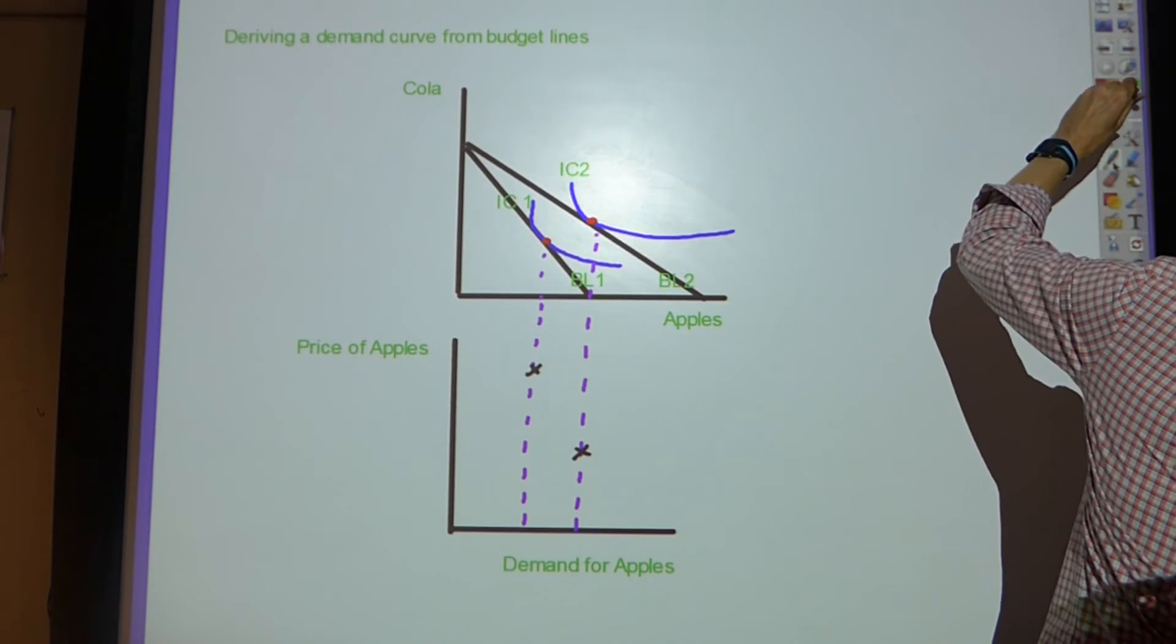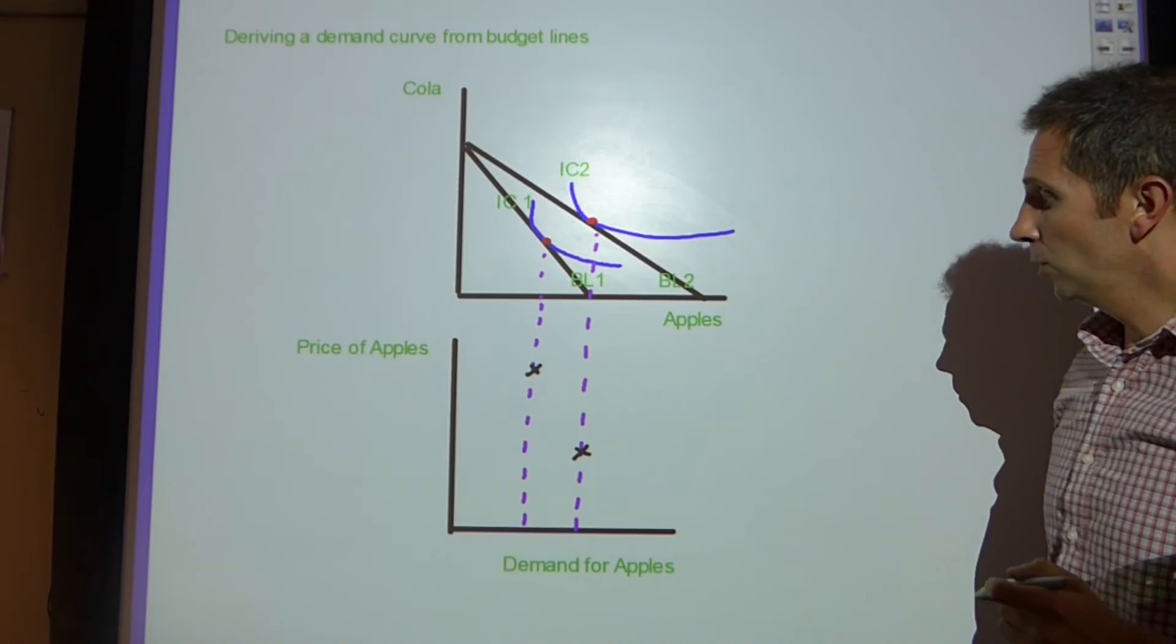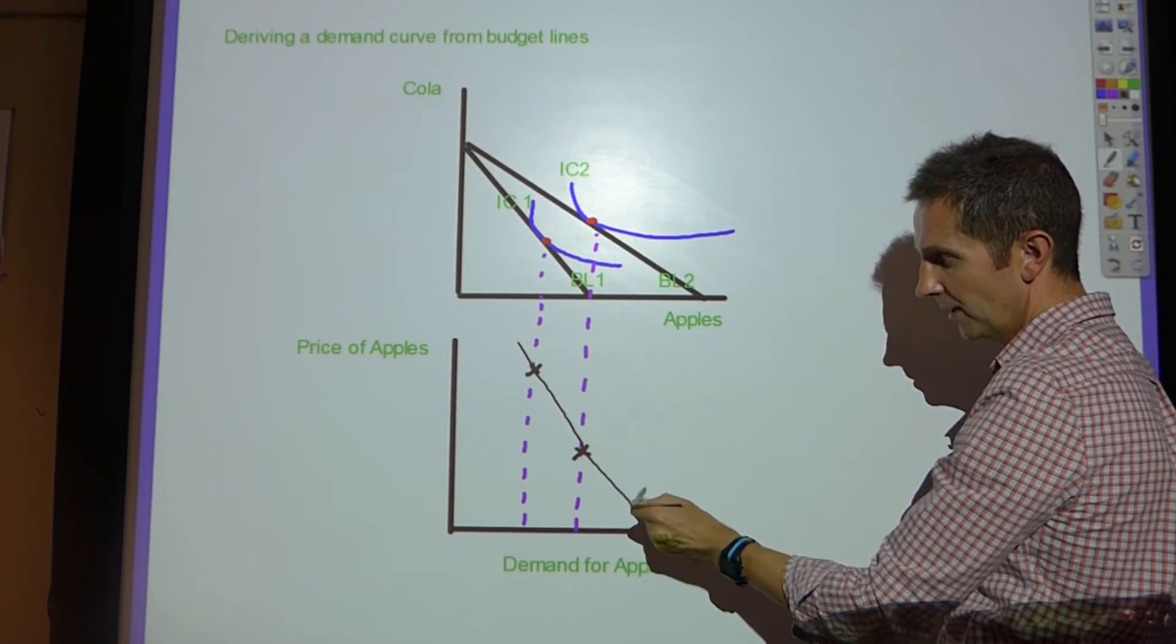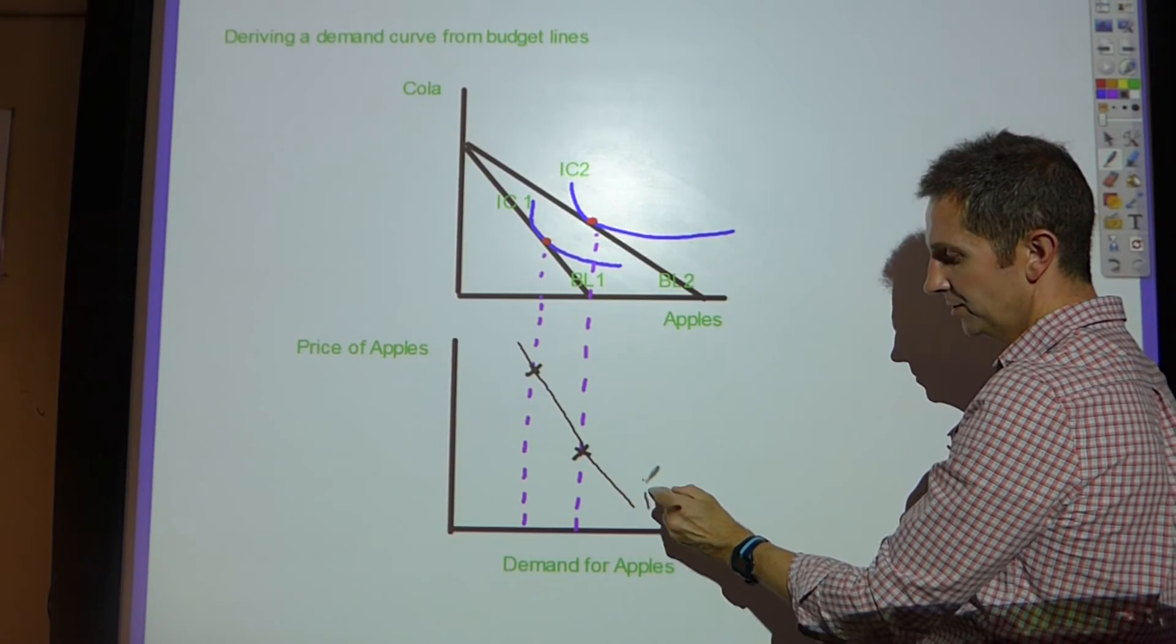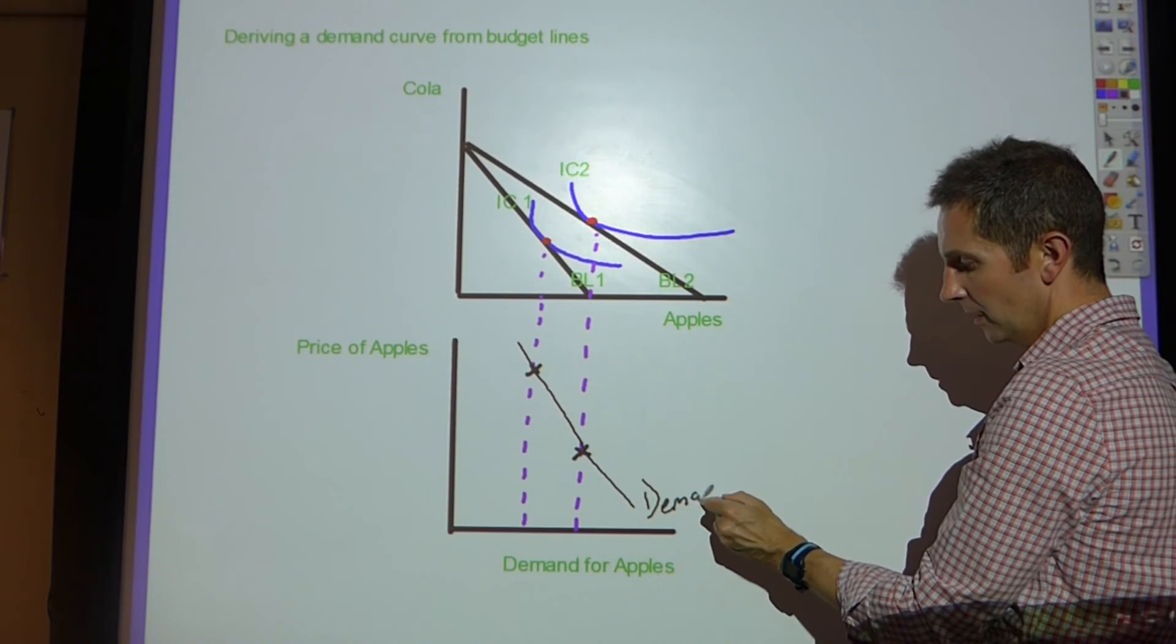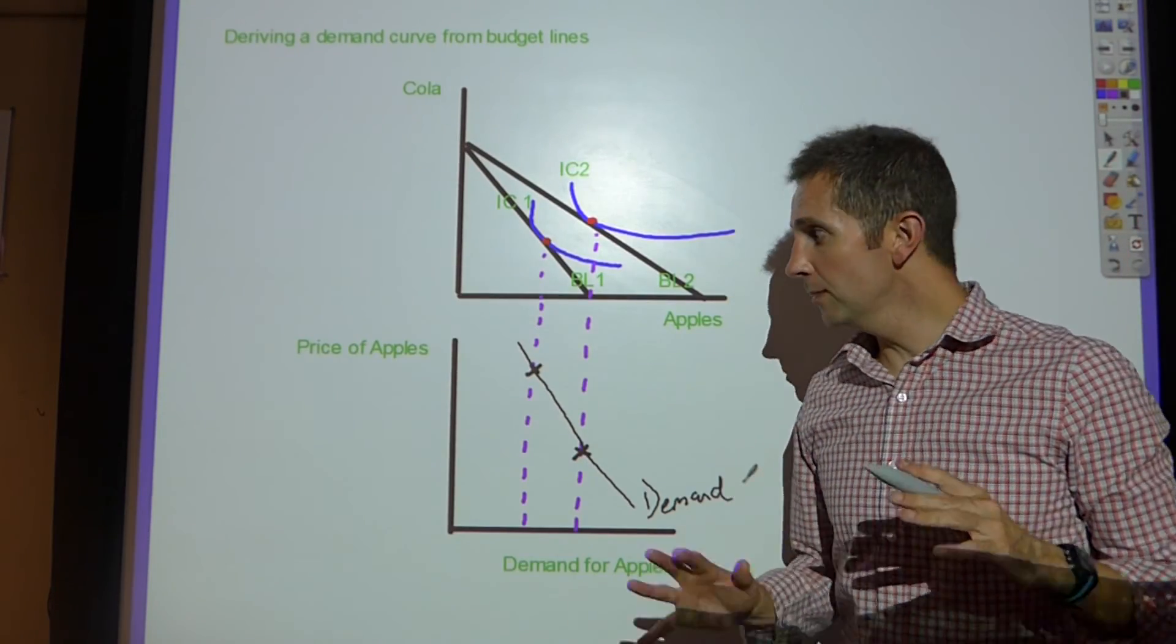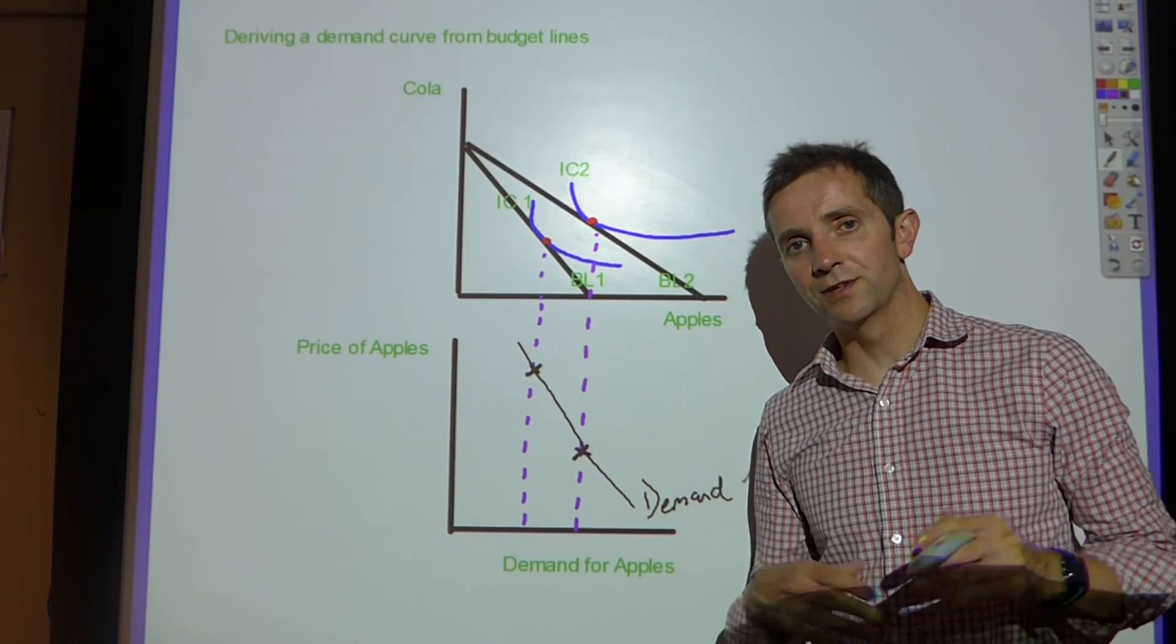And obviously to finish that diagram off nicely, all that would be necessary would be to join those points together. And there, ladies and gentlemen, we would have a demand curve for apples derived from budget lines and indifference curves. Simple as that.